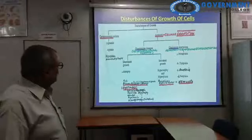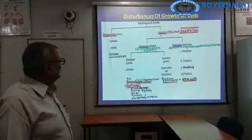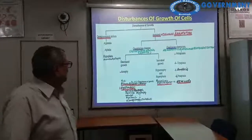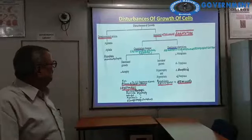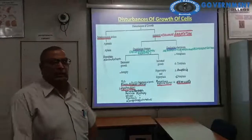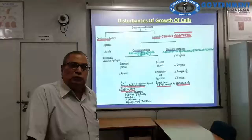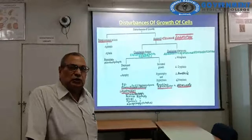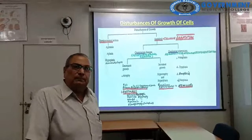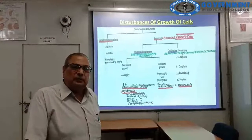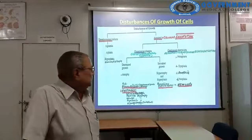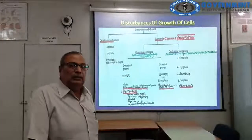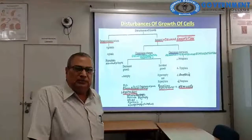Some muscular dystrophies also come in this developmental defects category. Now, acquired disturbances of growth — as has been taught in cellular adaptations — have been categorized into quantitative and qualitative changes.